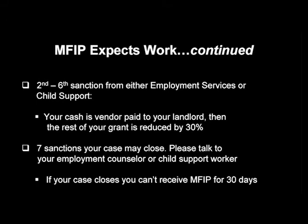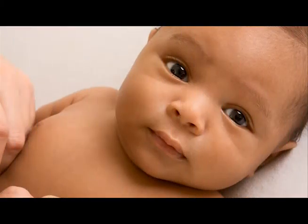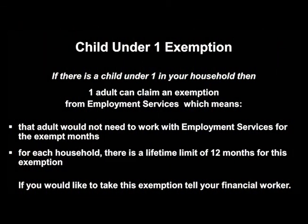Please talk to your employment counselor or child support worker to see what you need to do so your case does not close. If your case closes, then you are not eligible for MFIP for 30 days. You will need to reapply and then comply with employment services or child support before your MFIP can be redetermined. If there is a child under the age of one in your household, then one adult can claim an exemption from employment services. This means that adult would not need to work for those exempt months. If you would like to take this exemption, tell your financial worker so they can see if you qualify.